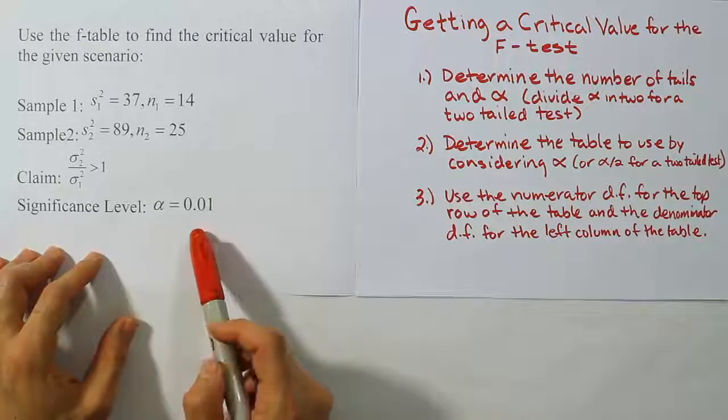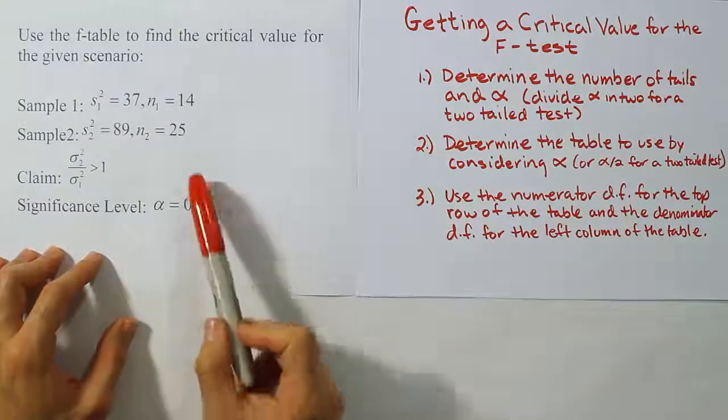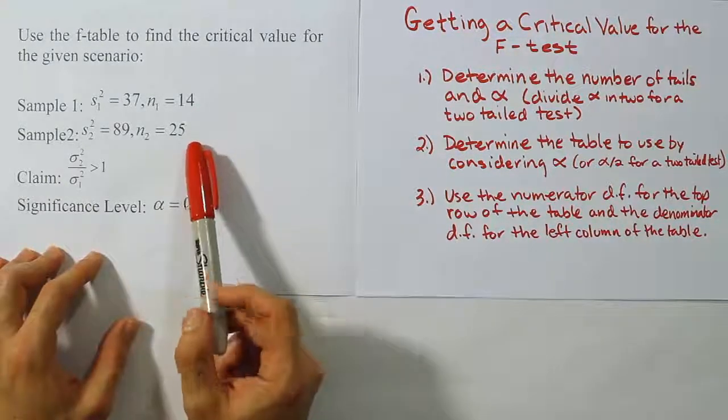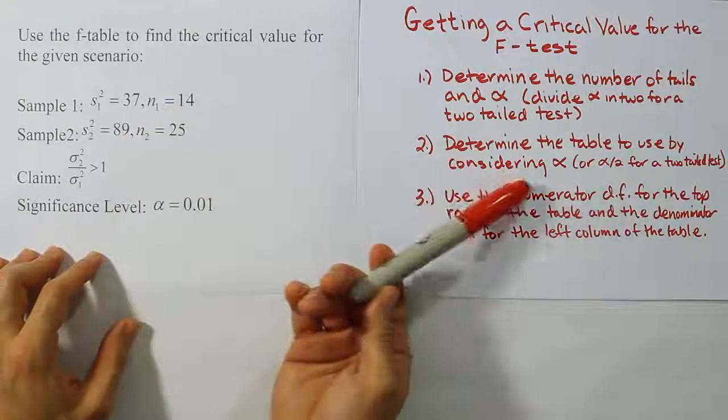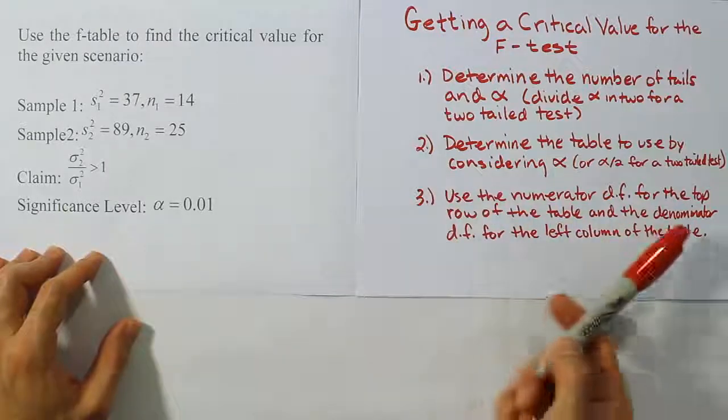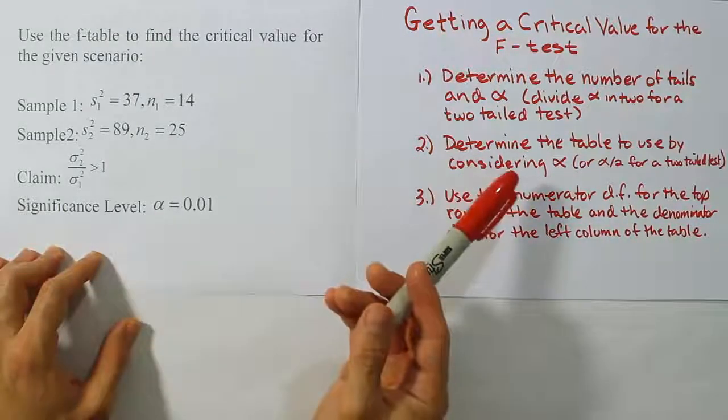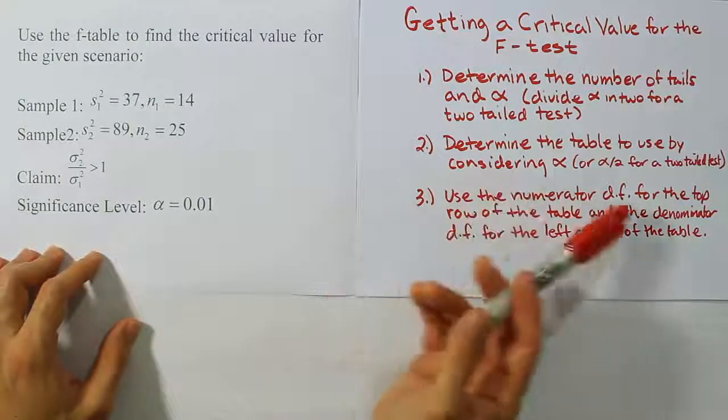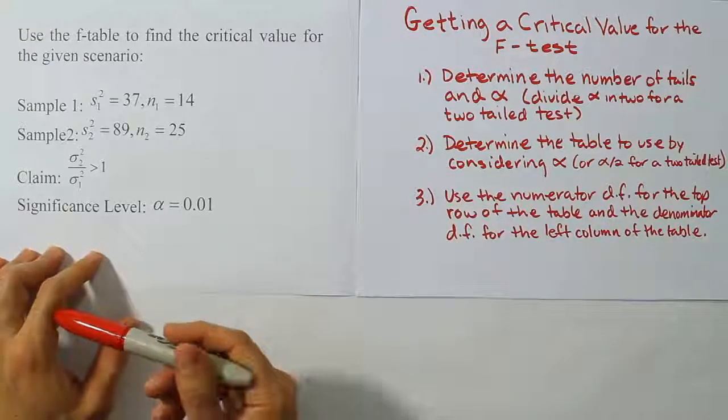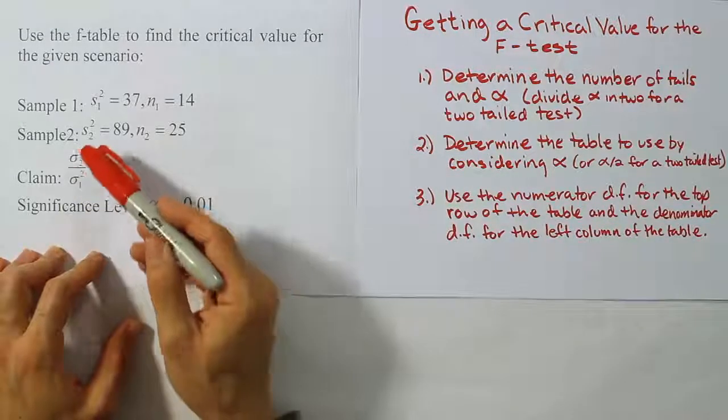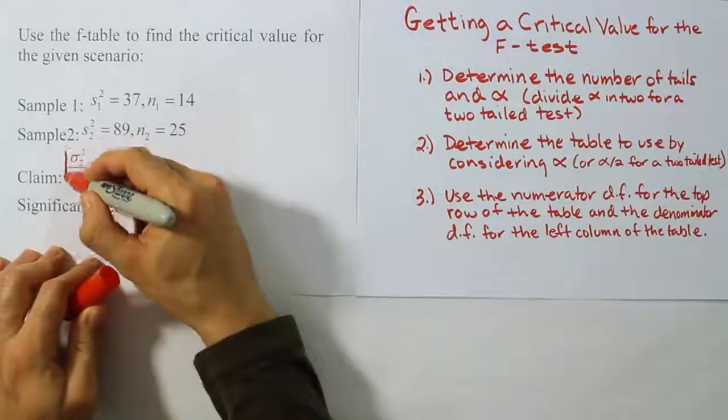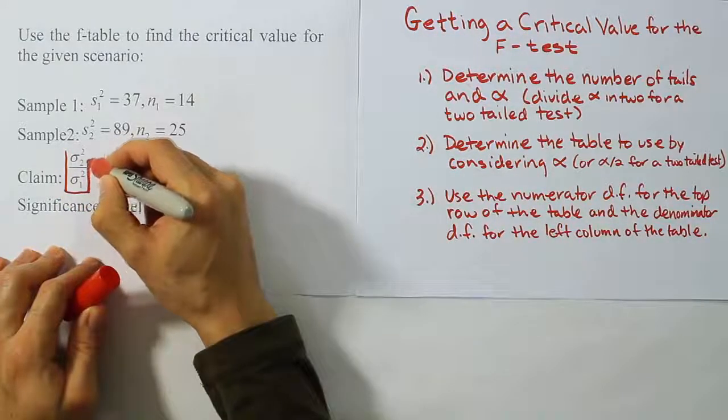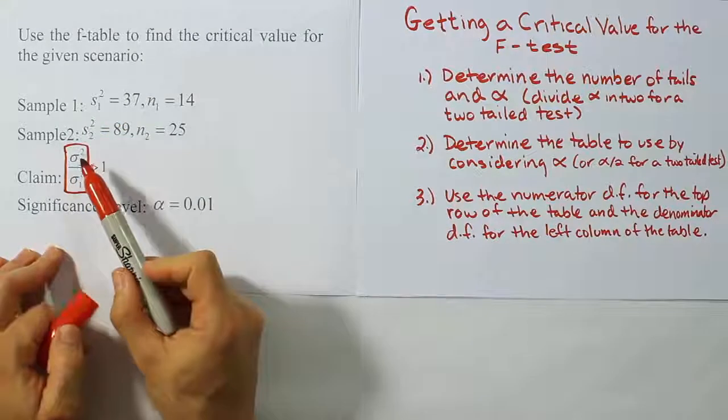And what we're going to go to the table with is we're going to go there armed with our sample sizes here. And basically what we have to do though is be careful about which one we're going to use as the numerator degrees of freedom and which one we're going to use as the denominator degrees of freedom. So this might be a new notation for you or a new language for you. We never had something called a numerator degree of freedom. Well, this problem has a fraction in it, right? It has a ratio.